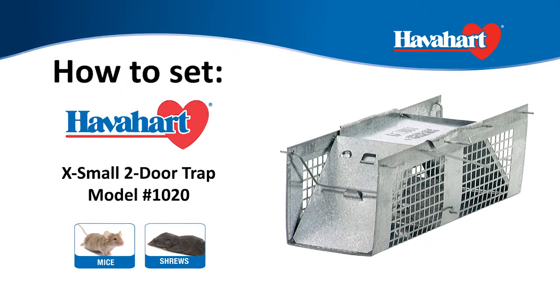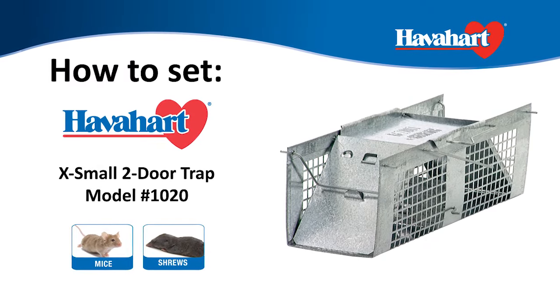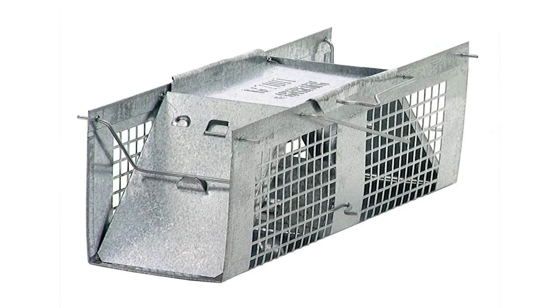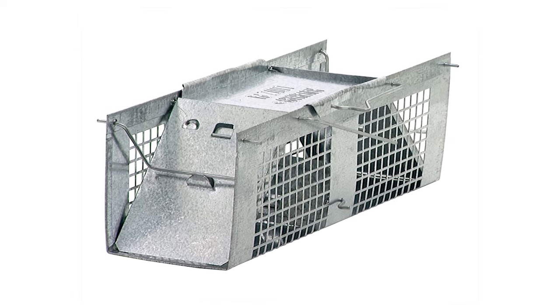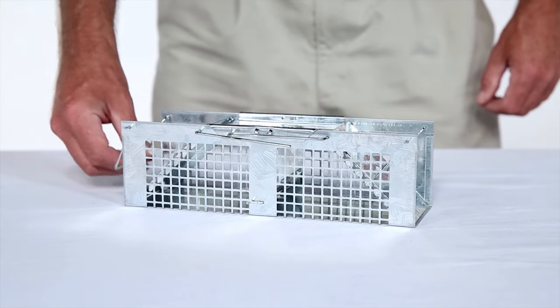The Havahart extra small two-door trap, model number 1020, is best used for the live trapping of mice, shrews, and other similar-sized animals. Here's how to set it. Start by turning the door locks to the open position to open both doors.